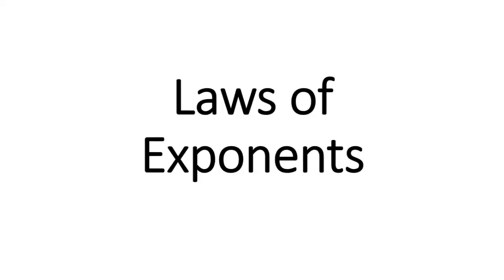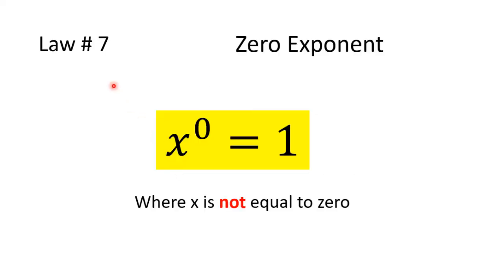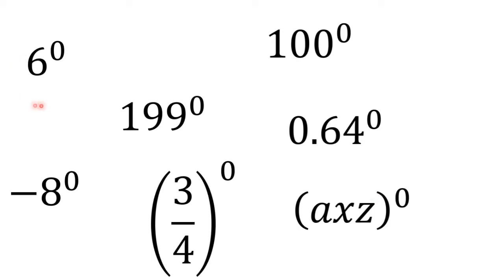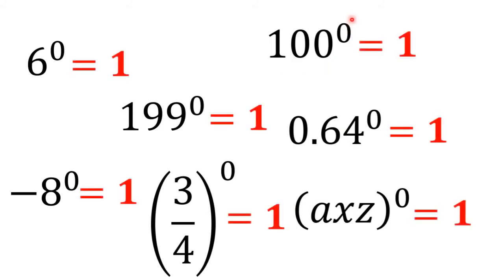Laws of exponents, law number seven: zero exponents. x to the power of zero equals one, where x is not equal to zero. This means every number with the power of zero — negative numbers, fractions, variables, decimals — with an exponent of zero